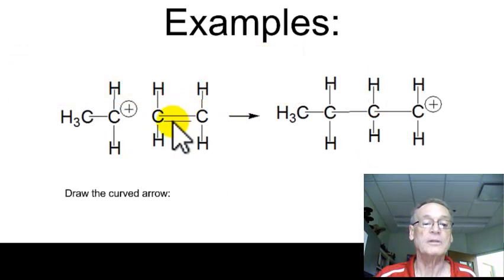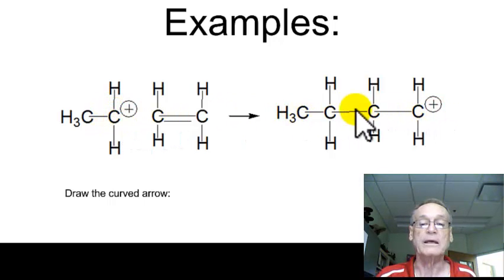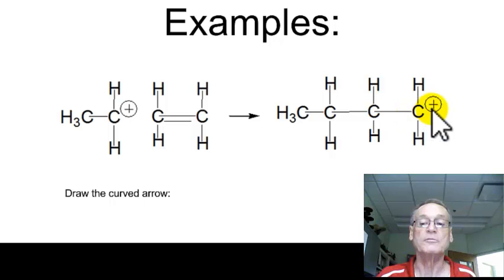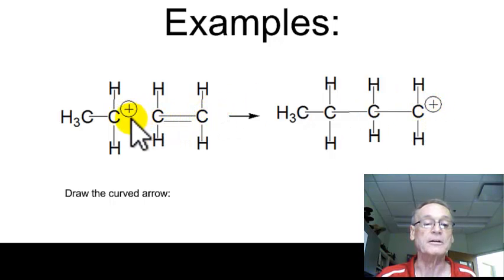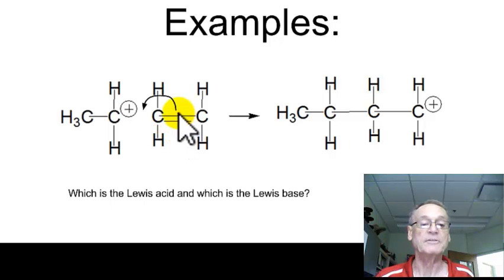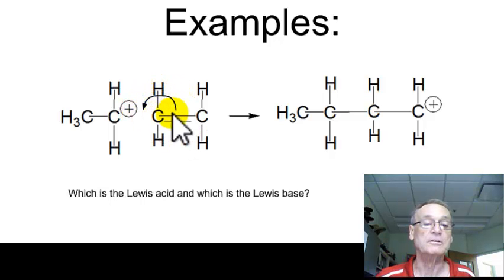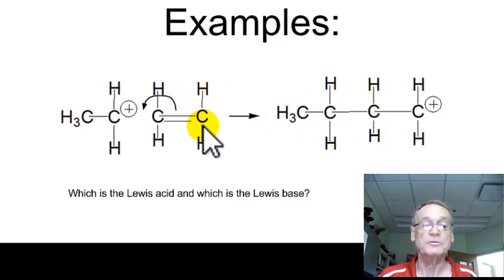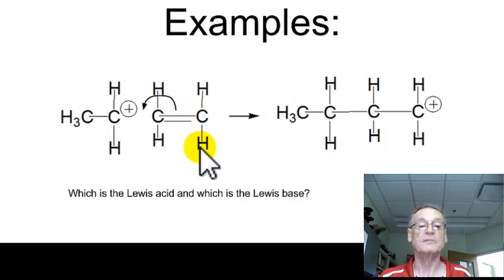Here's another example. This molecule, which is an alkene, and this molecule, which is a carbocation, react together to form a longer chain of carbons with a new positive charge. The double bond becomes a single bond in between. Draw the curved arrow — this pair of electrons moves in here to form a new bond right there. Which one's the Lewis acid and which one is the Lewis base?